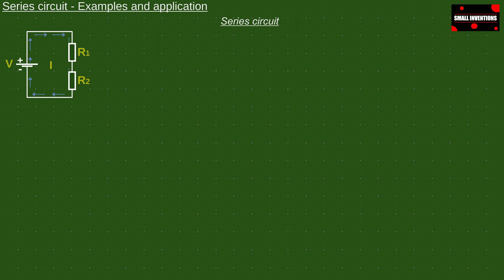Series circuit can be seen as a necklace. Each part of the necklace, although different, is connected to its neighbor in a row. The total weight of the necklace is the sum of all its individual parts.